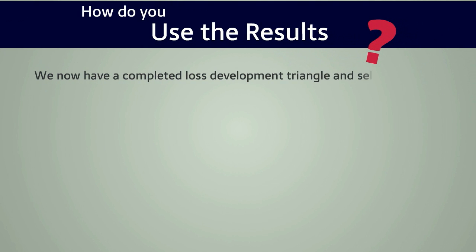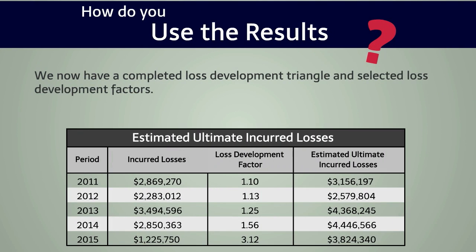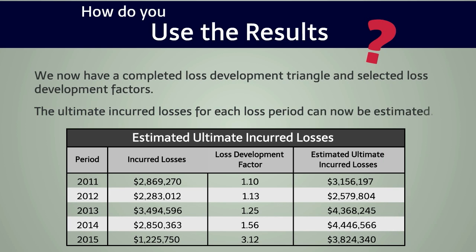We now have a completed loss development triangle and selected loss development factors. The next step is to apply the information. The ultimate incurred losses for each loss period can now be estimated. For example, the 2015 12-month evaluation of $1,225,750 is multiplied by the 12-month to ultimate loss development factor of 3.12, to yield an estimated ultimate loss amount of $3,824,340.